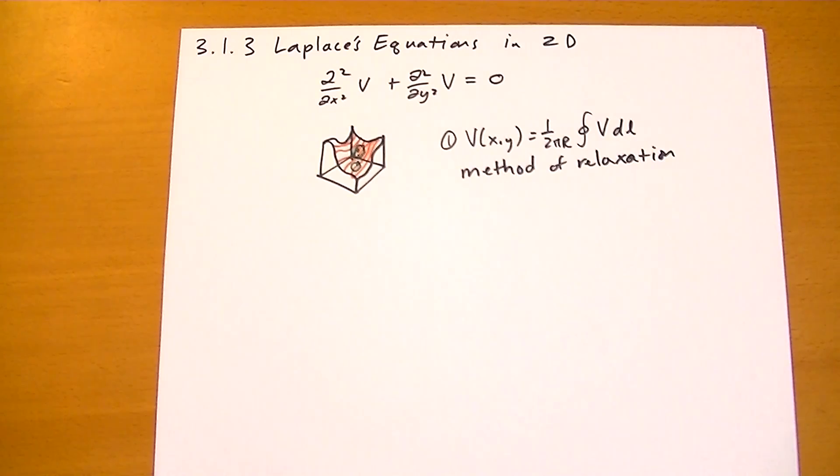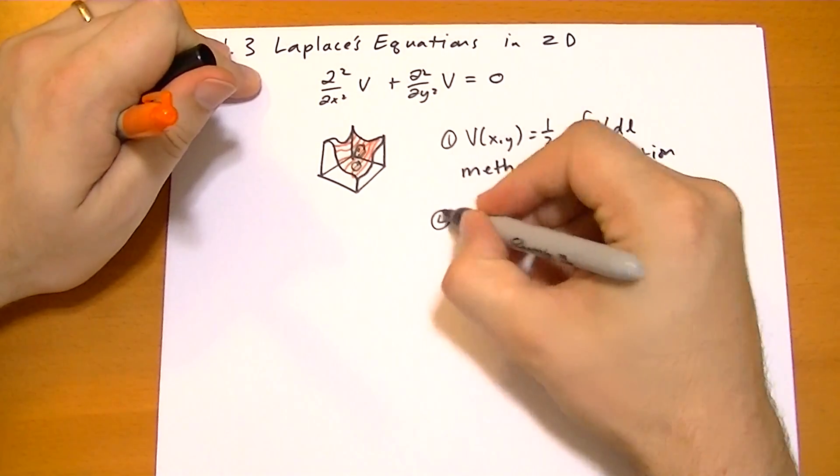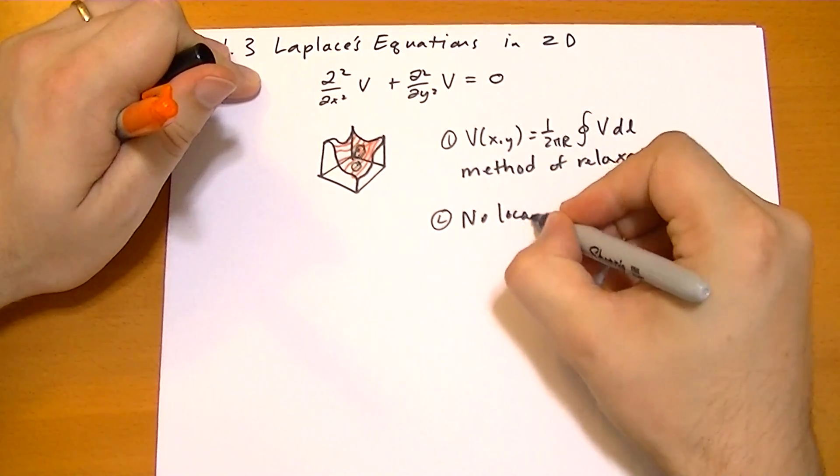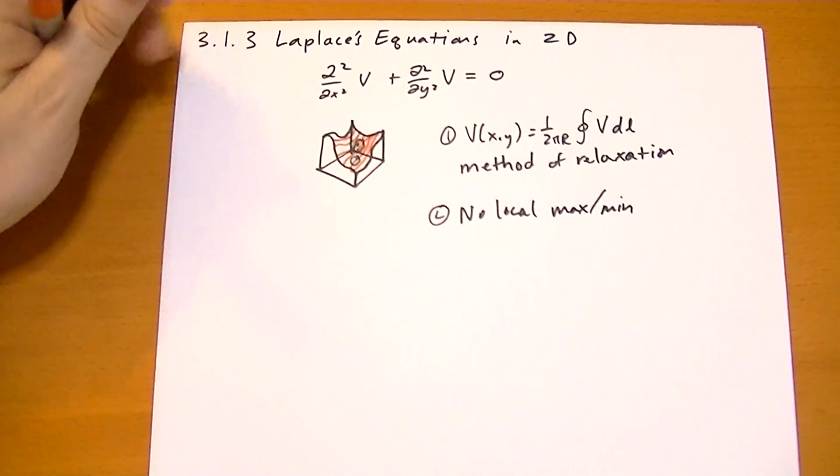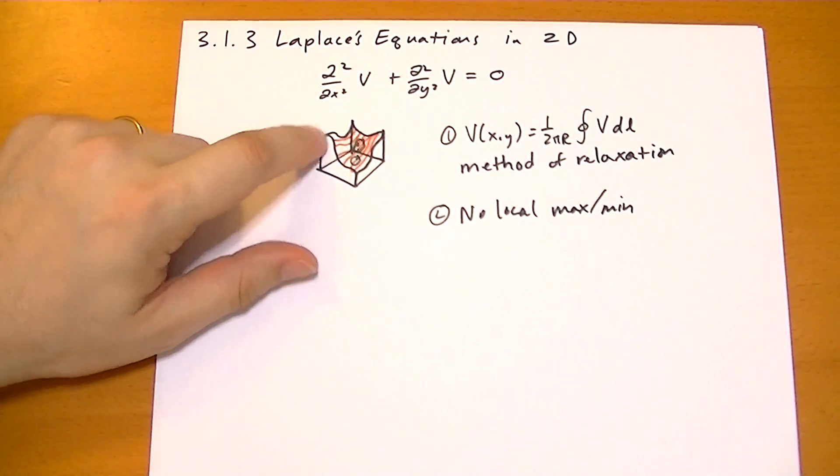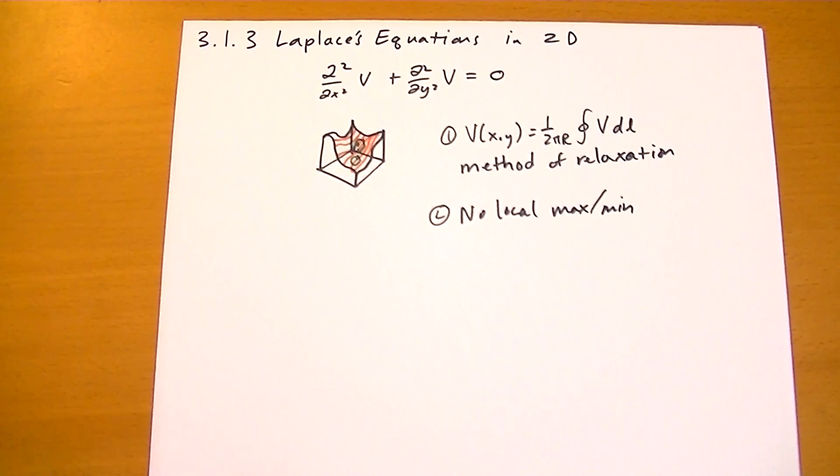The other thing to note is that there is no local max or min. And he talks about if you took a ping-pong ball and dropped it on that surface, it would roll off, because the minimums and maximums all occur at the boundary conditions.